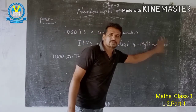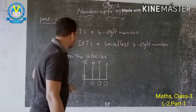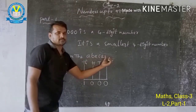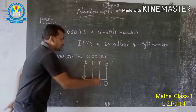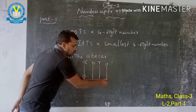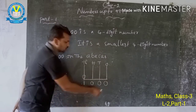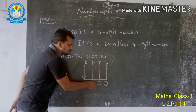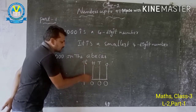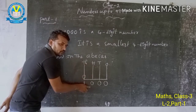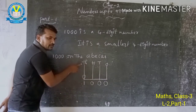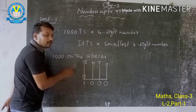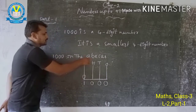Here, 1000 is shown on the abacus. The ones place has no beads, so 0. The tens place also has no beads, so 0. The hundreds place also has no beads, so 0. This represents 1000 on the abacus.